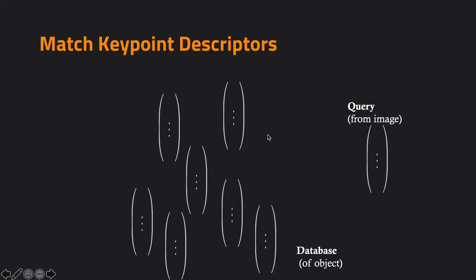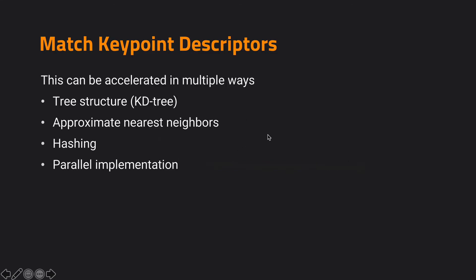After we extract those key point descriptors, given a new image we can have its own features, and for each feature from the new image we can map it to all the features in the database or all the detected key points, then find the best matching for that query feature. We can do this for all query features in a new image. To accelerate key point matching, if your feature dimension is not too high, we can usually construct a KD-tree of the feature space to reduce the complexity of feature searching.